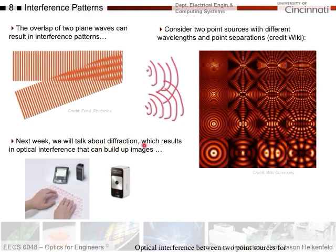Next week we'll talk about diffraction, which results in optical interference that can build up even images. This little optical keyboard is projected by a component here and also senses where your fingers are. The reason a laser can project onto a keyboard pattern is through diffraction, which is a form of optical interference.